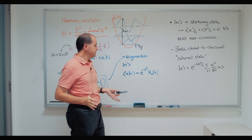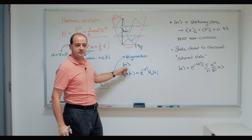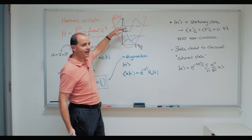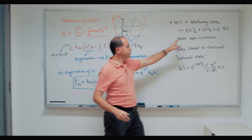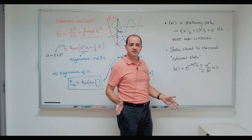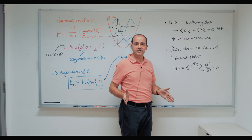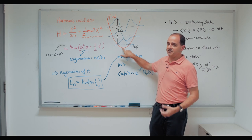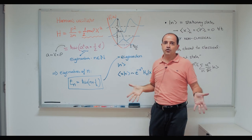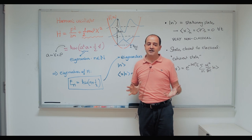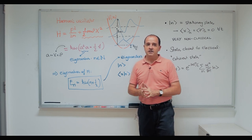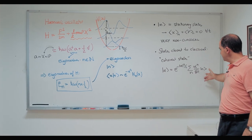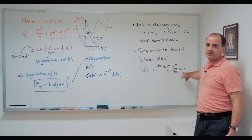A very important thing to keep in mind is that these number states — the states of well-defined energy — are stationary states. They are eigenstates of the Hamiltonian, so for every energy level, the position and momentum expectation values do not change in time. This is highly non-classical: in classical physics, the only state of the harmonic oscillator that does not change in time is the one sitting at rest at the minimum. Here we have infinitely many states that don't move. The states whose dynamics looks closest to classical states are called coherent states — very complicated superpositions of all the number states — and we're going to study them in detail.